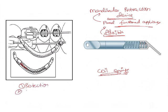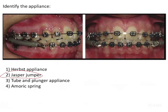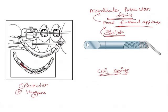Secondly, the plastic covering is given for hygiene, so that food debris does not accumulate between the coil springs. This plastic covering, as you can appreciate in the image, is characteristic of the Jasper Jumper. At the end, you can see the coil spring ends with a stainless steel cap.